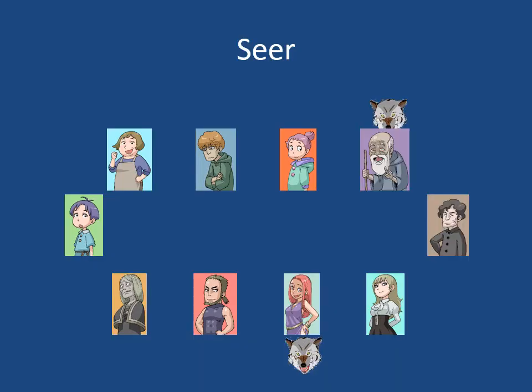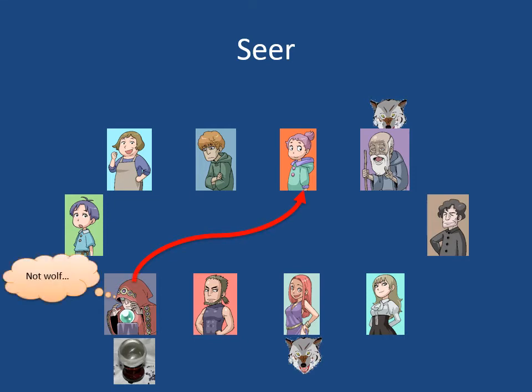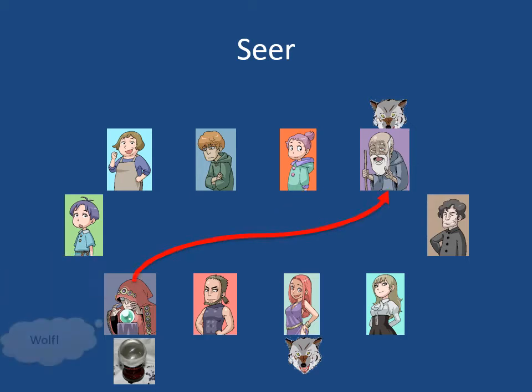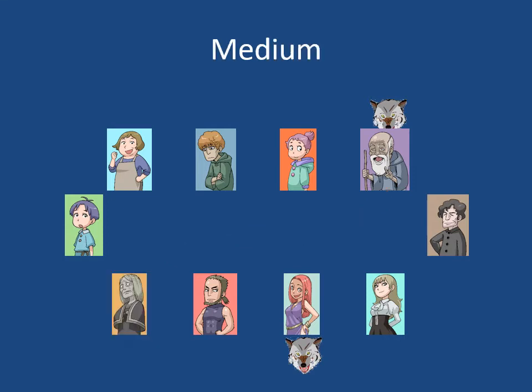There are also special roles, such as the Seer. The Seer has the skill to inspect someone and find out whether they are a werewolf or not. For example, in the night phase, the Seer selects a player and finds they are not a werewolf. And if the Seer selects another player, they find that player is a wolf. There is also a Medium — a role to inspect whether someone who was executed is a wolf or not. This role happens only in the closed game.